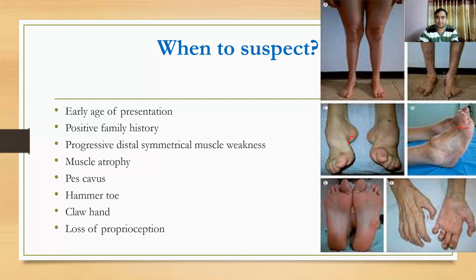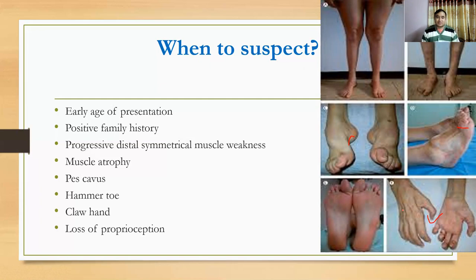Claw hand is also seen, as shown in the sixth picture. If the patient has pes cavus, hammertoe, or claw hand, these features add to our diagnostic algorithm. Regarding sensory symptoms, patients usually do not have prominent positive sensory symptoms like pain and tingling, but may have loss of proprioception and can fall as a result.